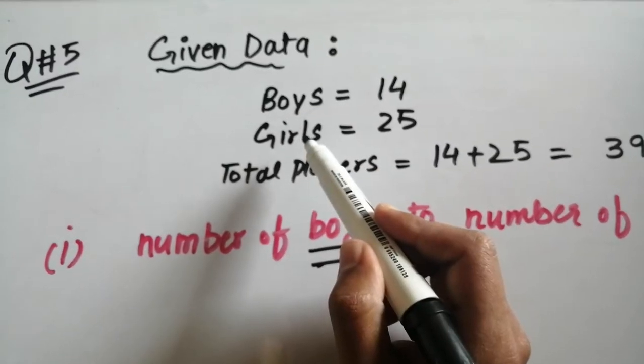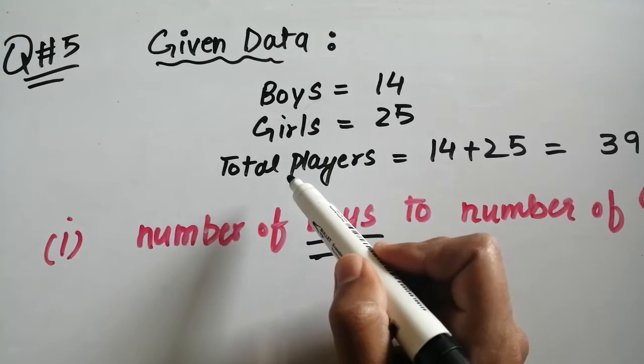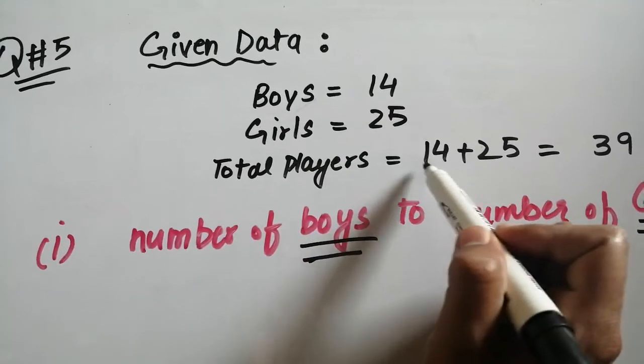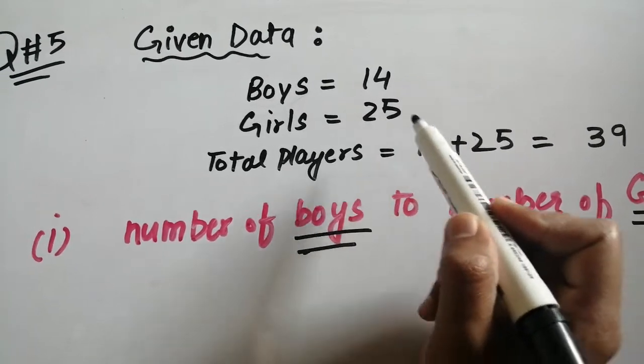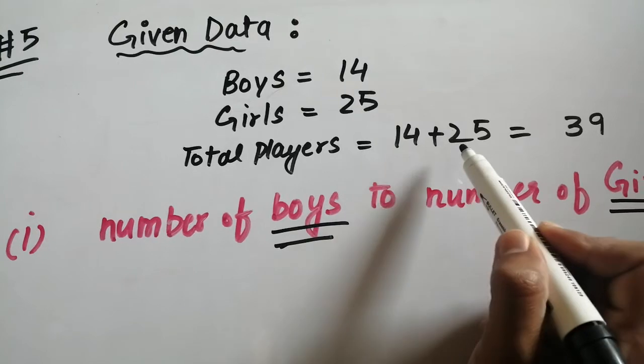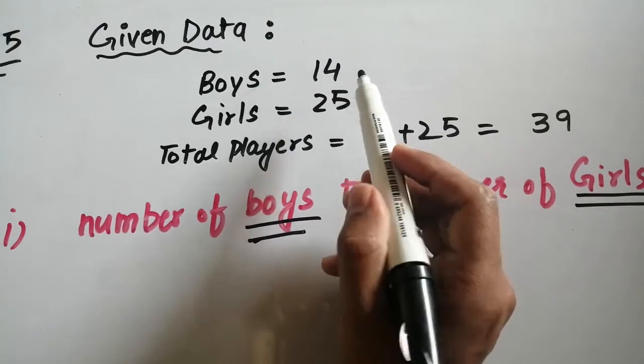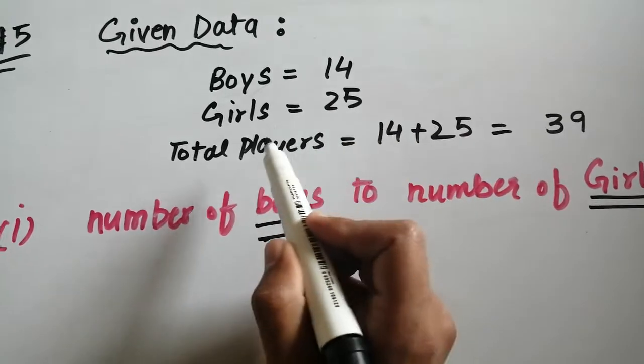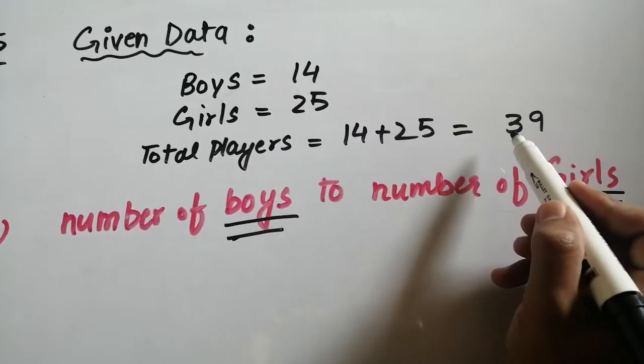I have taken total players, which means boys and girls. So boys have 14, and I have added girls 25. So 14 plus 25 equals 39. So the total players have been 14 plus 25 equals 39.